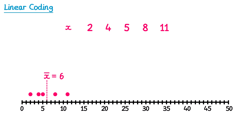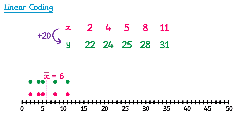Now let's imagine we create a new variable, let's say y, and to create y we're going to add on 20 to all of the x values. So for the first x value of 2 we add 20 to get 22. The next x value is 4 so we add 20 to get 24, and then we continue to add on 20 to all of the x values. Visually, we take the x values, add 20 to them, shift them to the right 20, and this gives the y values.